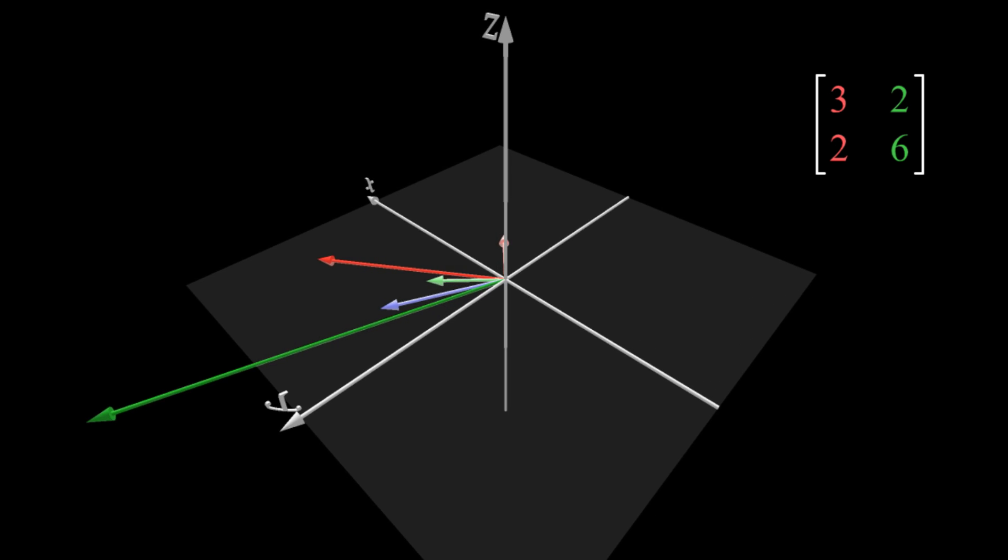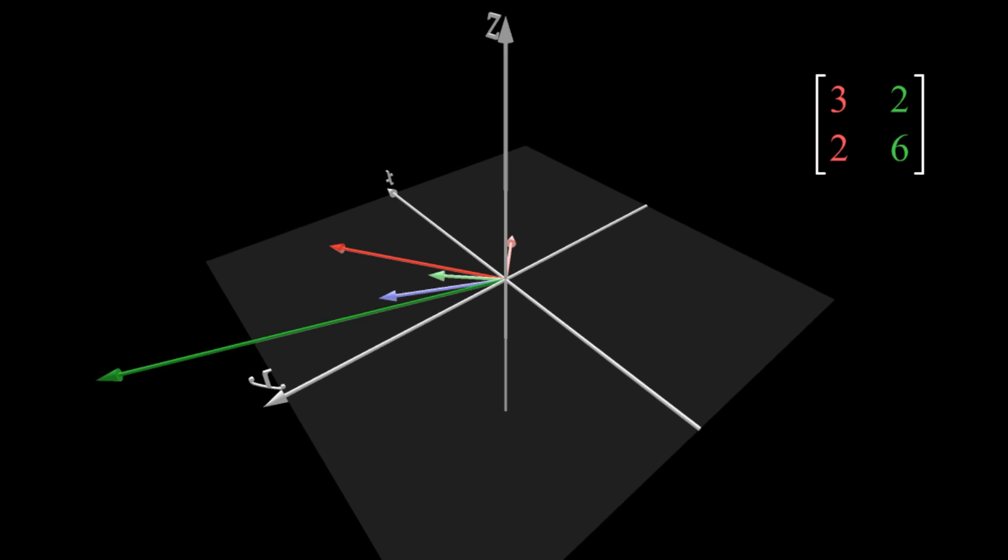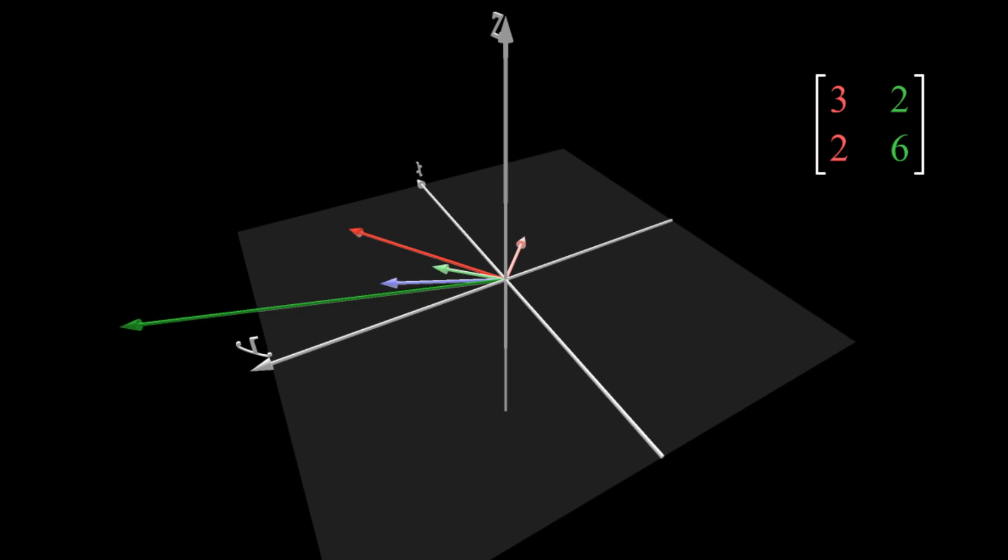So now, the two three-dimensional vectors become two two-dimensional vectors, described by a 2 by 2 matrix.